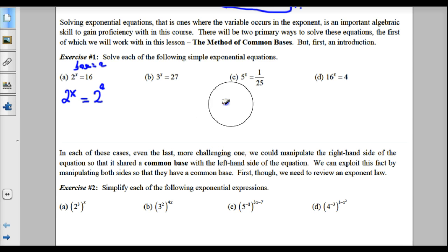Now that I have the same base, this is where it gets super easy. I drop the base, so the 2 and the 2 are gone, and then I take my exponent and solve it. In this case, I don't need to do anything. x = 4. Just drop the base and keep my exponent. My exponent is x and here is 4.